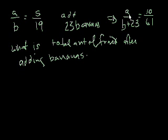so now the new ratio is going to be the number of apples to b plus 23, the new ratio is 10 to 61. So how do we solve this?